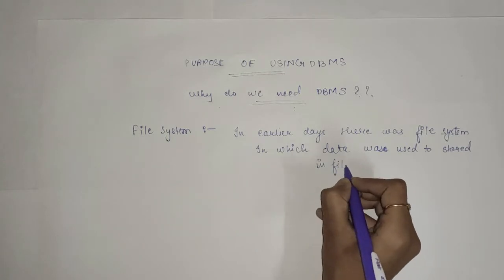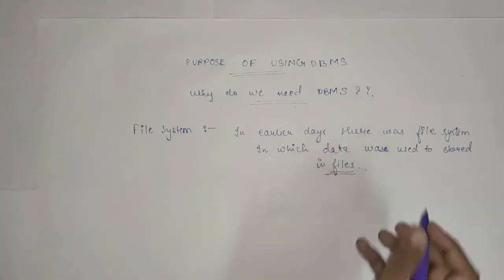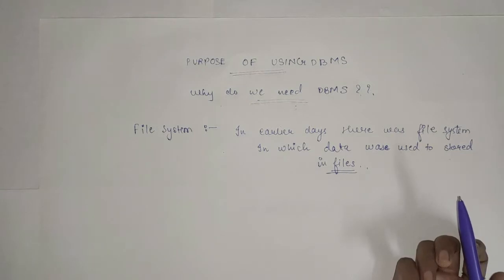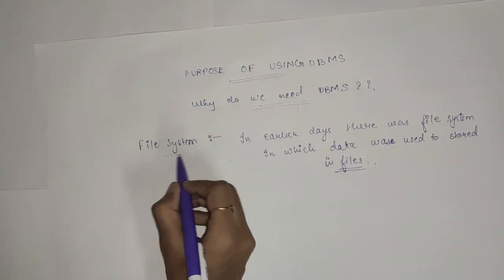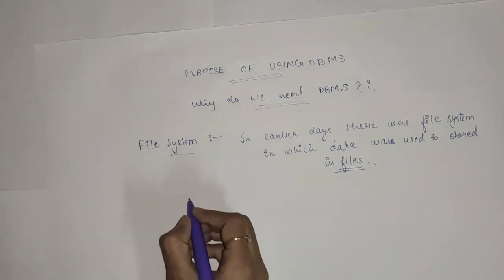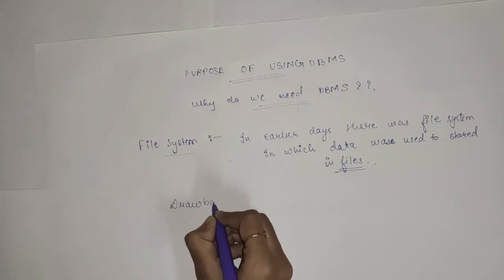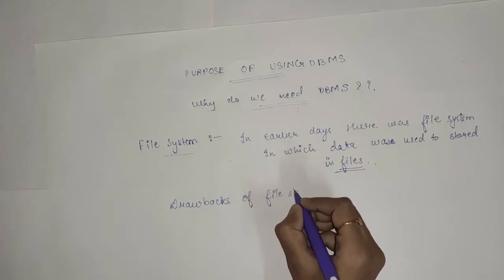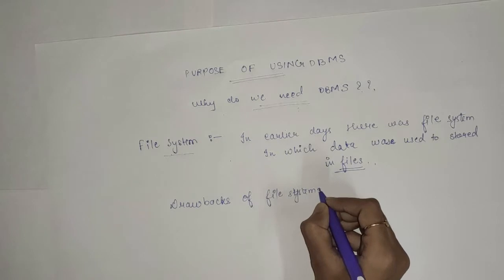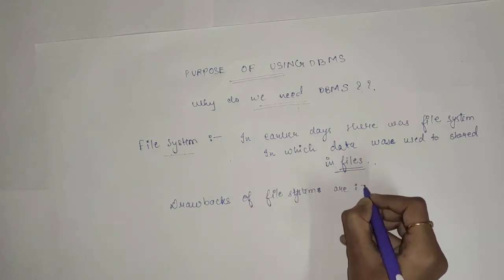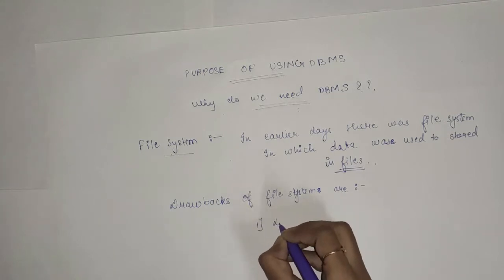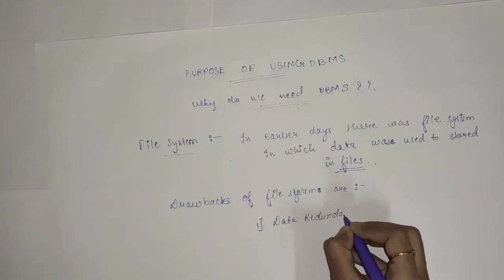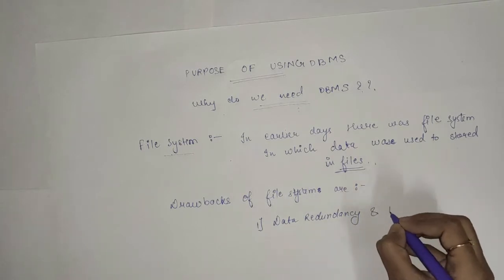But now, instead of using file system, why do we use database system? This is because the file system has some drawbacks. The drawbacks of file system are: first, data redundancy and inconsistency.